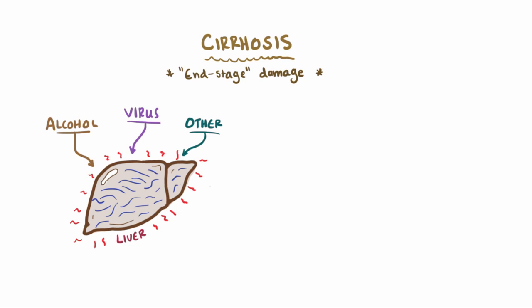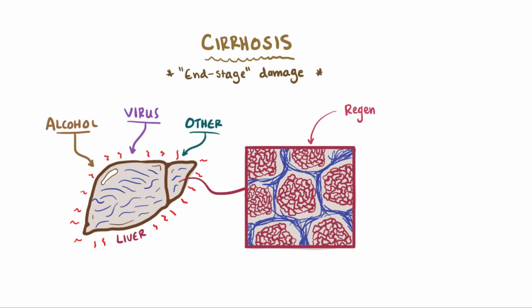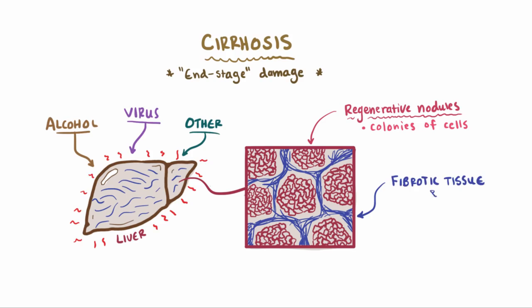When liver cells are injured, they start to come together and form what are called regenerative nodules. You can think of these as colonies of living liver cells, and these are one of the classic signs of cirrhosis — they are why a cirrhotic liver is more bumpy as opposed to a smooth, healthy liver. With cirrhotic liver tissue, you'll also see that in between these clumps of cells, or nodules, is fibrotic tissue and collagen.